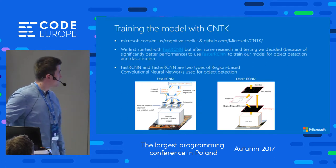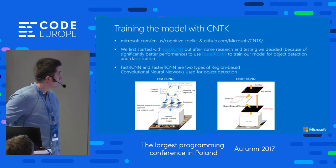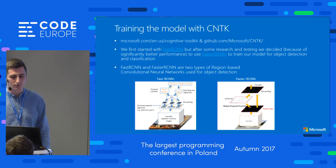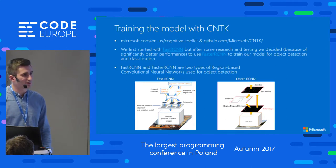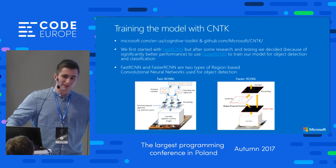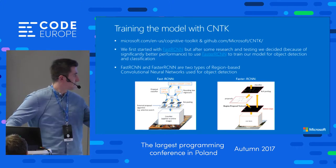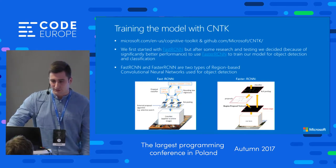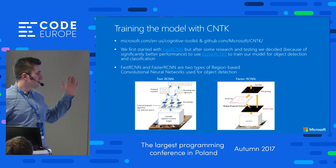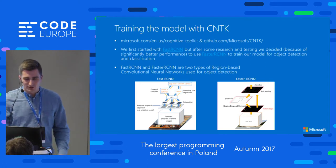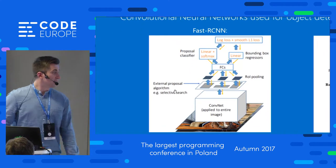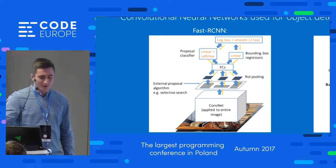We started with a Fast RCNN approach, but after some research and after Faster RCNN was released for CNTK, we switched to Faster RCNN because it's much faster, with better performance and better accuracy. Both Fast and Faster RCNN are types of region-based convolutional neural networks. Faster is obviously faster — that's really the main difference.